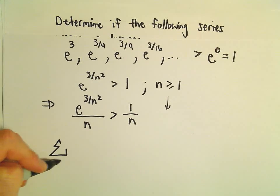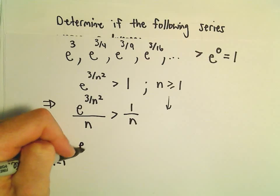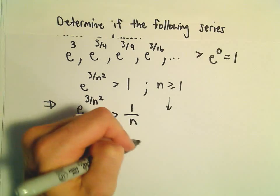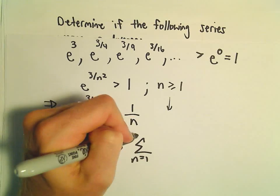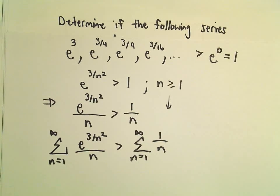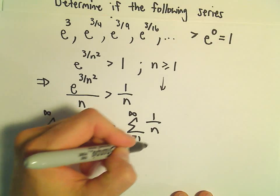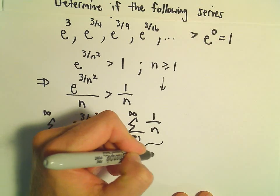Well, that means the series from 1 to infinity of e to the 3 over n squared over n is going to be larger in value than the series n equals 1 to infinity of 1 over n. But the series on the right, we know that this is a divergent p-series.